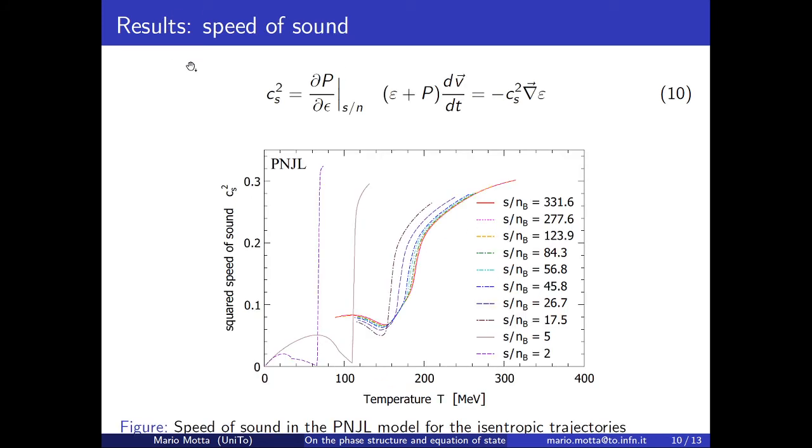From the speed of sound, I show this plot. At low chemical potential, the speed of sound is smooth and has a minimum at a certain temperature. At high chemical potential, the speed of sound is sharp and has a non-derivative point. The speed of sound is very important, as you can see in the Euler equation for the hydrodynamic evolution of the fireball.